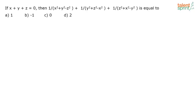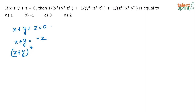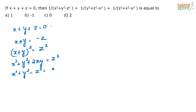If x plus y plus z is equal to 0, then what is 1 by (x² + y² - z²) plus 1 by (y² + z² - x²) plus 1 by (z² + x² - y²) equal to? Given x + y + z = 0, we can say x + y = -z, so (x+y)² = z², which gives x² + y² + 2xy = z², or x² + y² - z² = -2xy.